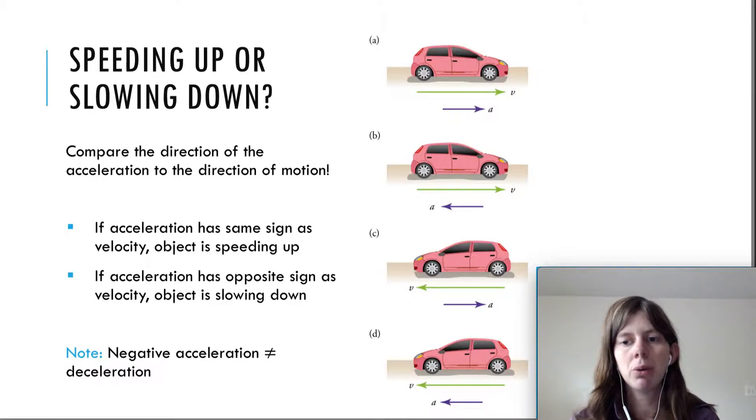So, I want to spend a little bit of time focusing on how do we know if we're speeding up or slowing down. I did mention this in video 6 with the Moving Man applet, so feel free to take a look. But, really, all you have to do is compare the direction of the acceleration to the direction of motion.